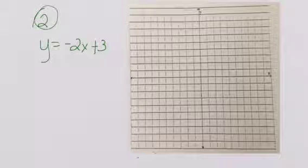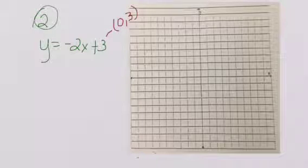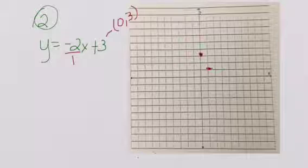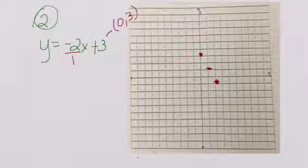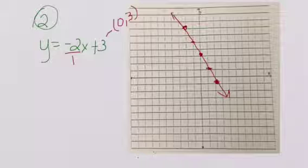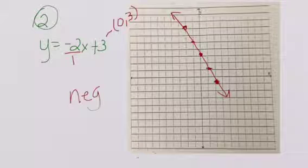The next one — we need to find our starting point. We look at b, and our starting point is going to be zero, three. We write it as an ordered pair, find our slope which is m, write it as a fraction, and now we're ready to graph. Our slope tells us to go down two to the right one, then down two to the right one again. We go back to our starting point and do exactly the opposite: up two to the left one, up two to the left one. We connect our points, draw our arrows, and identify this as a negative slope.